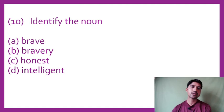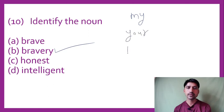Identify the noun. First is brave, second is bravery, third is honest, fourth is intelligent. Which one is a noun? He is brave. My bravery. He is honest. My intelligence. So bravery is the noun here.